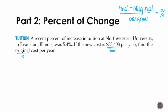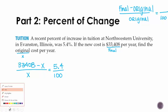Remember that percent is a number over 100. So that's how we're going to set up the original, so 33,408 minus the original divided by the original equals our percent. So 5.4 over 100.